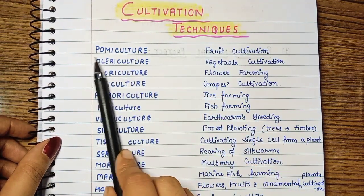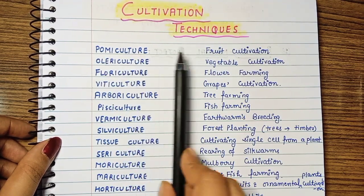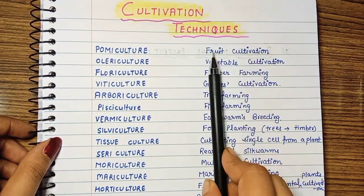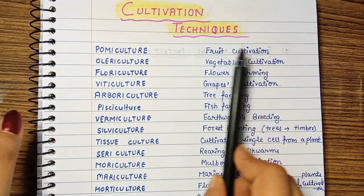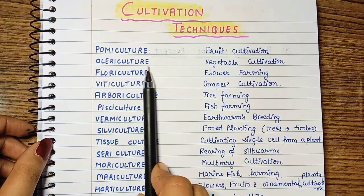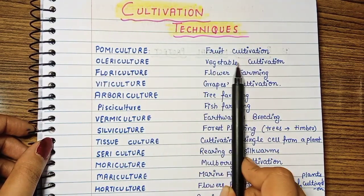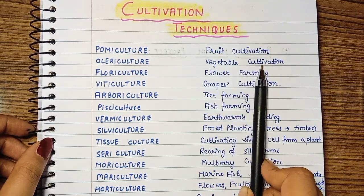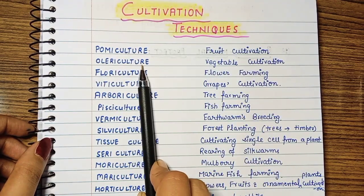First of all, Pomi Culture. Pomi Culture means Fruit Cultivation — growing fruits, which is called Pomi Culture. Olery Culture means Vegetable Cultivation — vegetables, which is called Olery Culture.